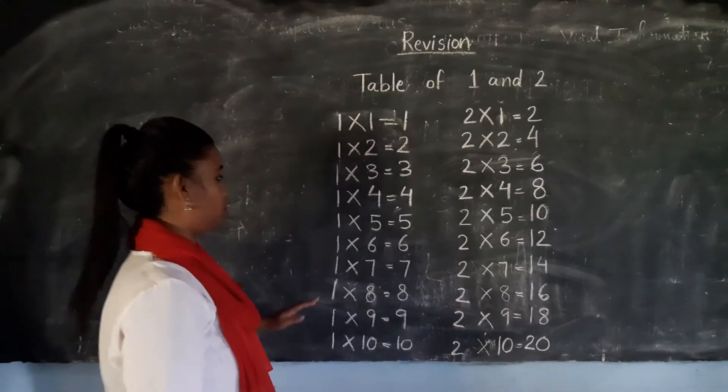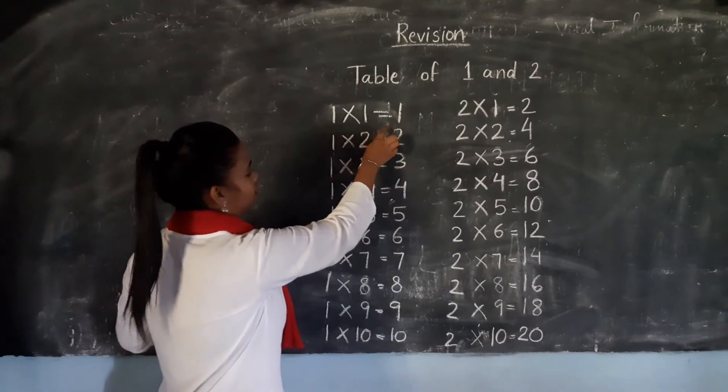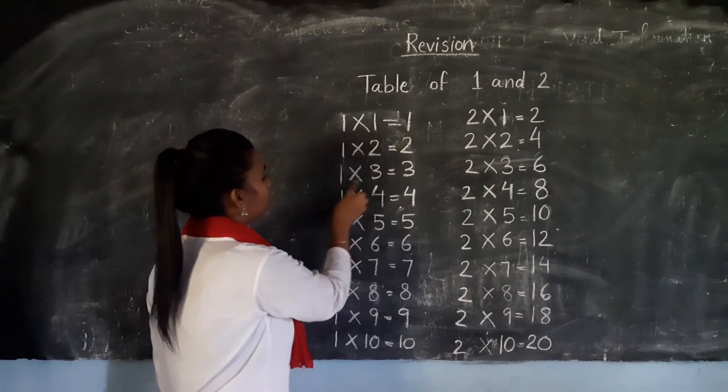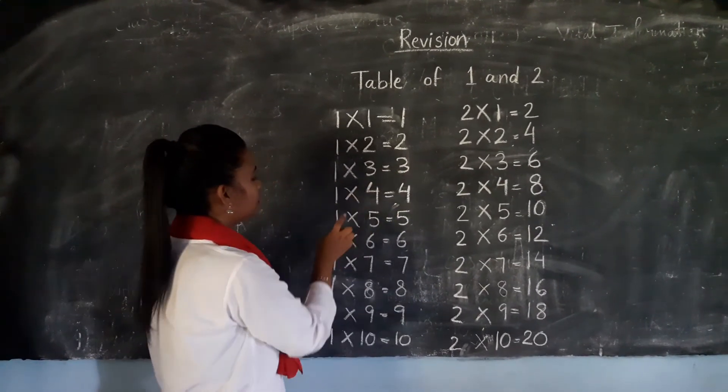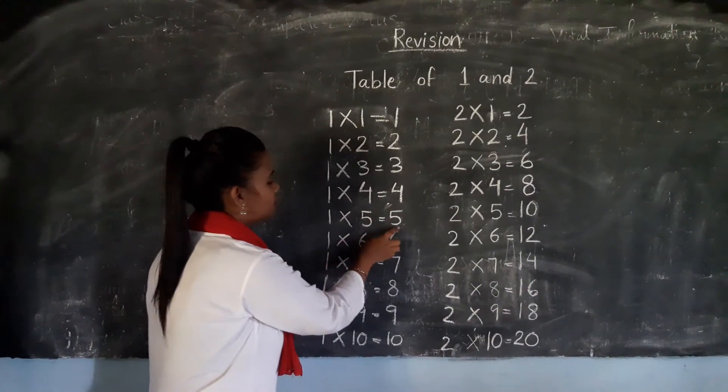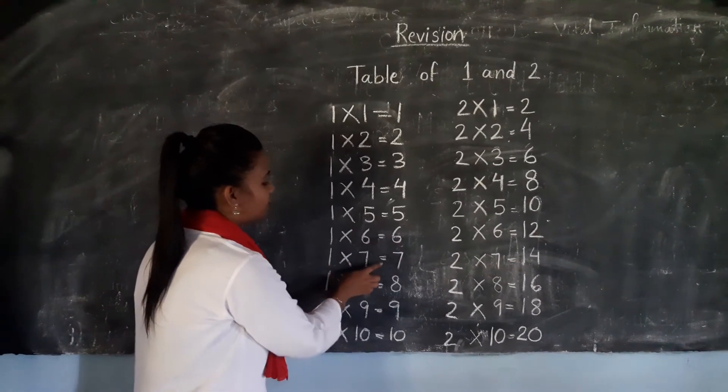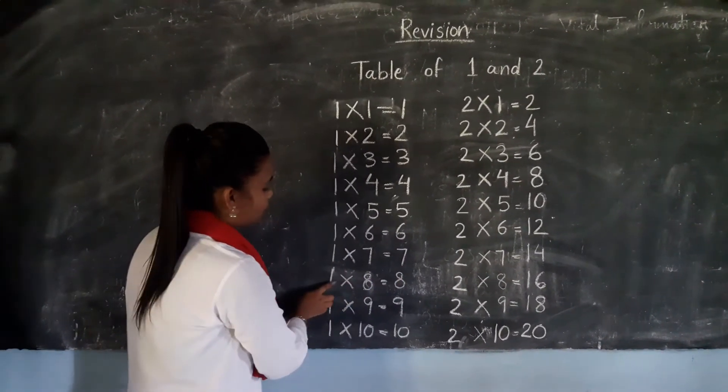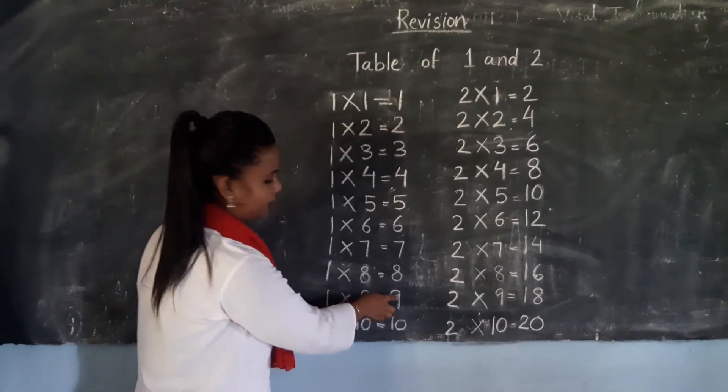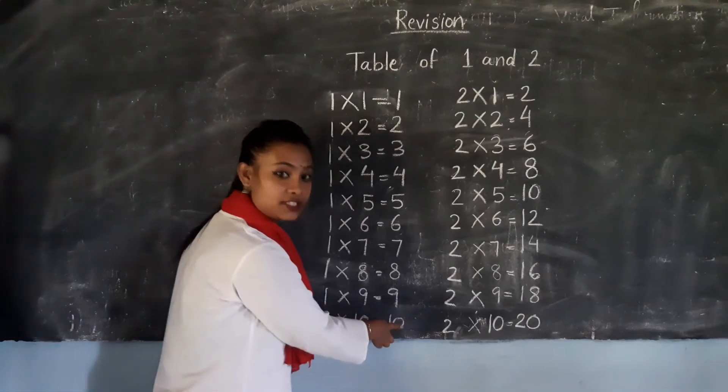So let's repeat again, alright? I request all of you to pay attention once more. 1×1=1, 1×2=2, 1×3=3, 1×4=4, 1×5=5, 1×6=6, 1×7=7, 1×8=8, 1×9=9, and 1×10=10. Alright?